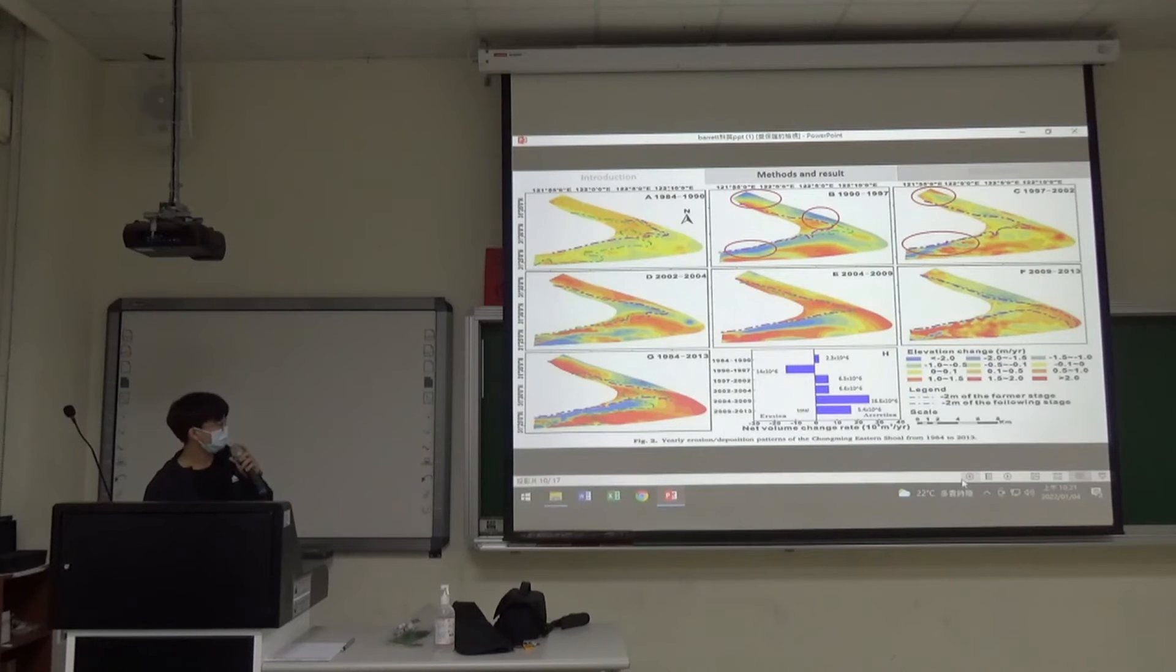Let's see picture D. The deposition part is more than picture C. Picture E compared to picture D shows just here getting eroded but other places are getting depositioned. Picture F compared to picture E shows more places are getting depositioned, but only here was getting eroded. Picture G is from 1984 to 2013. You can see that the deposition part is more than the erosion part.